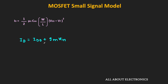So Id0 is the DC drain current, and Gm × Vin is the change in the drain current due to the input signal. That means under the small signal approximation, the total response of this MOSFET is the summation of the DC response and the AC response. Using the principle of superposition, the DC and the AC analysis can be done separately. While considering the DC analysis, the AC signal can be assumed as 0, and similarly during the AC analysis, this DC voltage can be assumed as 0. Under this small signal approximation, the change in the drain current is linearly proportional to the input signal Vin, and the MOSFET can be replaced by the small signal equivalent model.